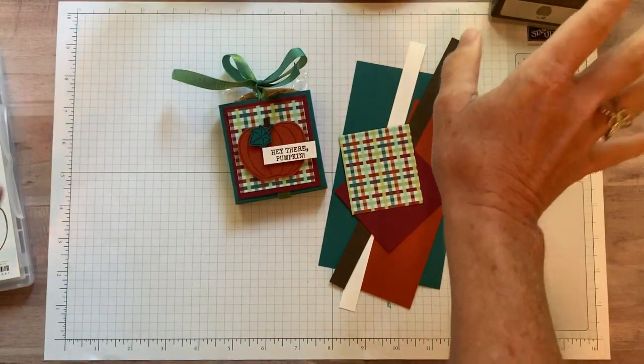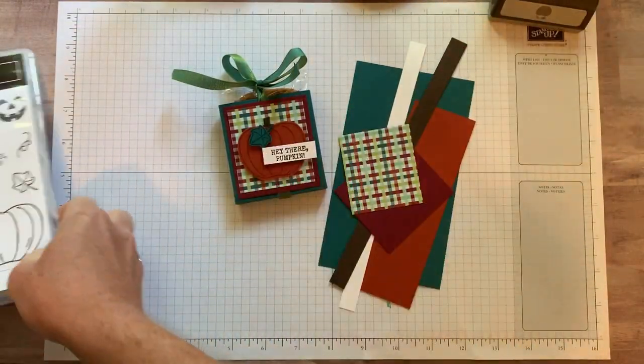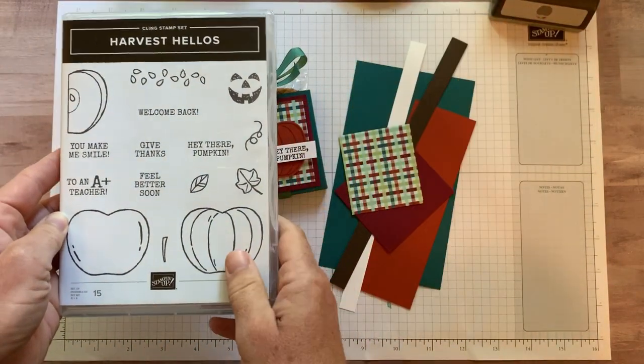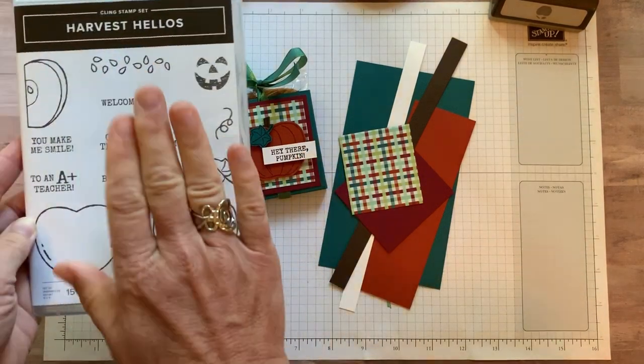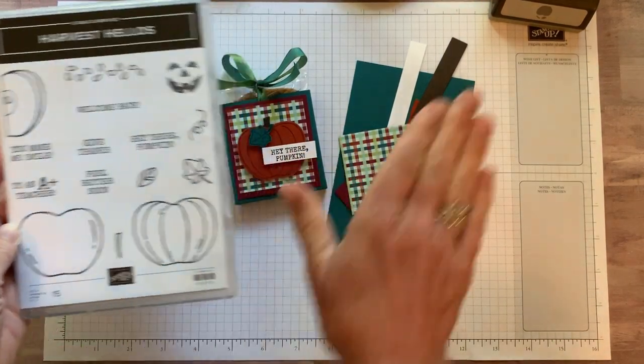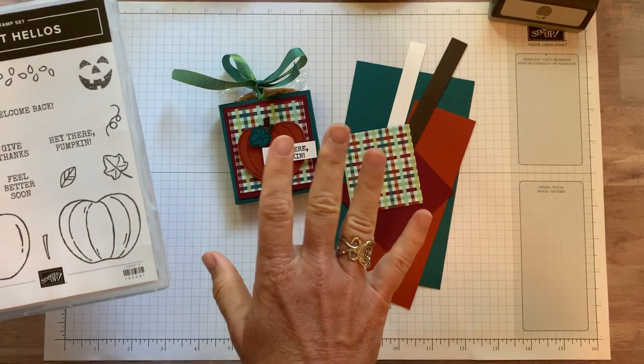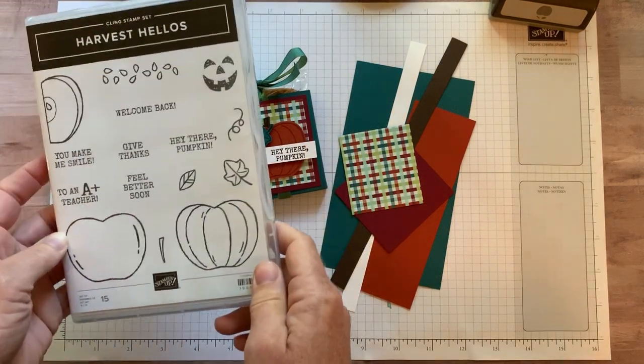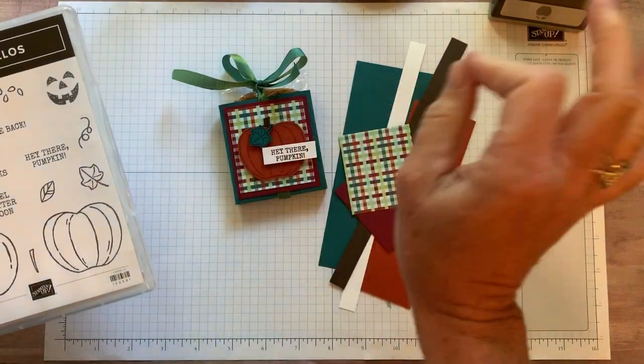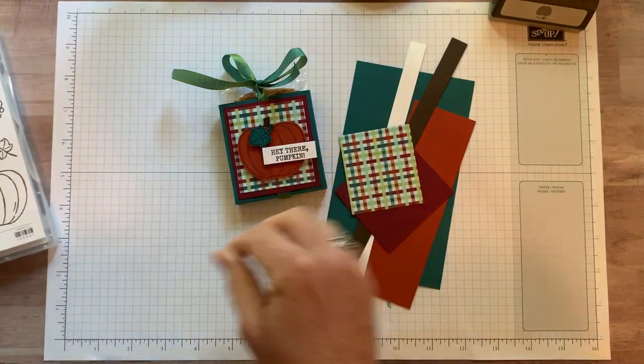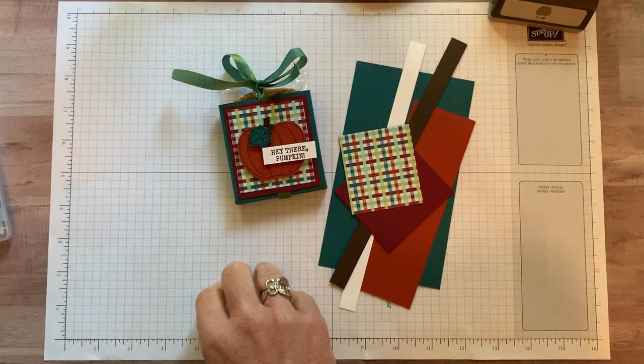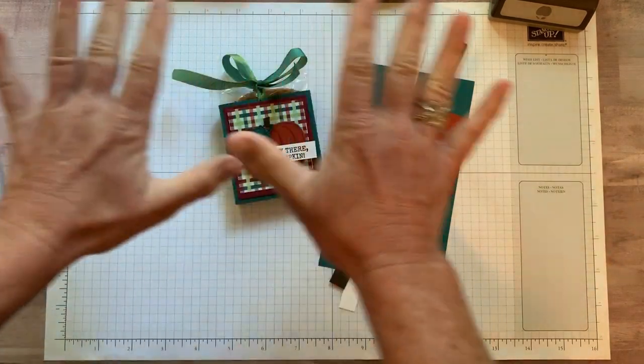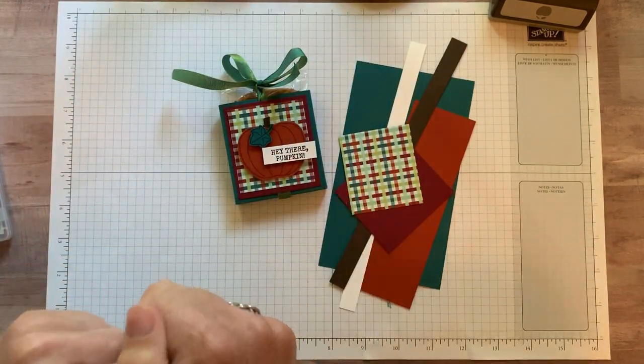If you want to get the stamp set, if you want to get the punch, if you want to get both of them, you can get them in the bundle. And before I forget to mention, I will include the item codes for everything that we use on this project in the details to the YouTube video. So when you're ready to order and make this cute project, just grab those item codes, hop on over to my website. You can get your order in and be able to make fun, cute little treats like this as well.